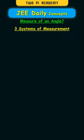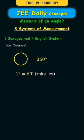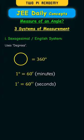And there are three systems to measure the angle. The first is the sexagesimal or English system which uses degrees. A complete circle consists of 360 degrees and every degree consists of 60 minutes and every minute consists of 60 seconds.